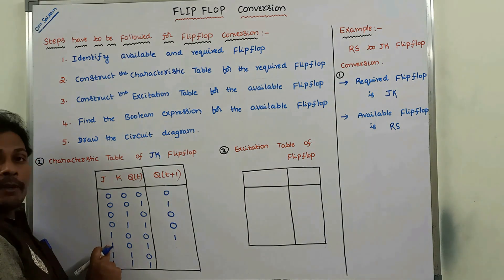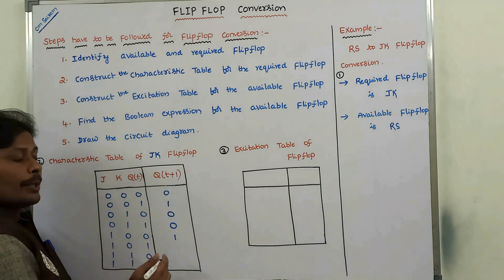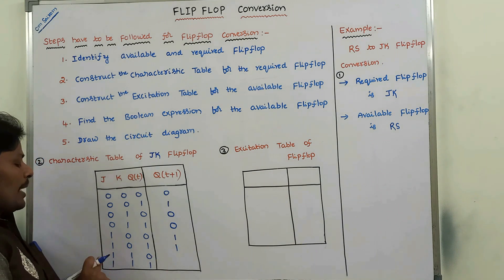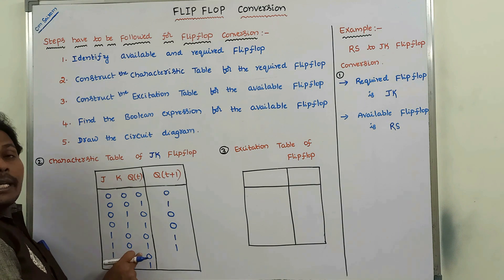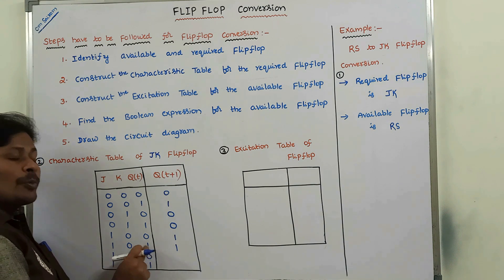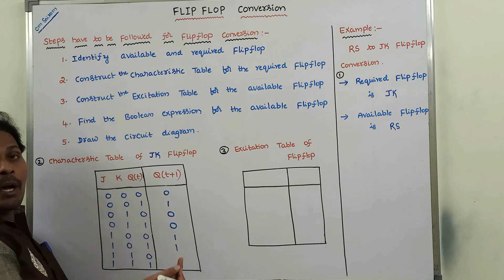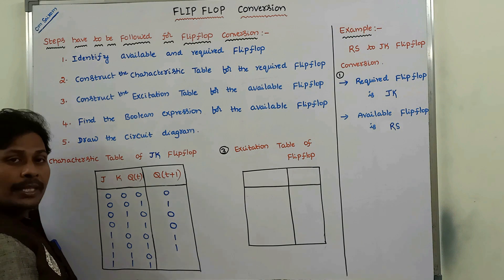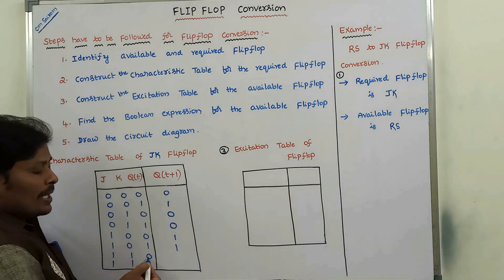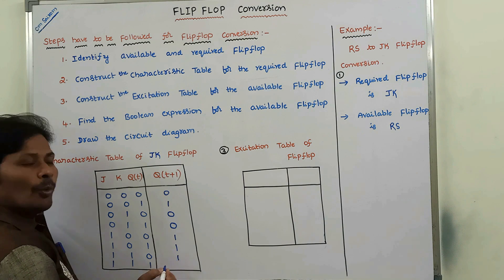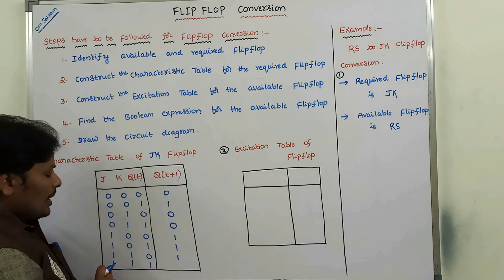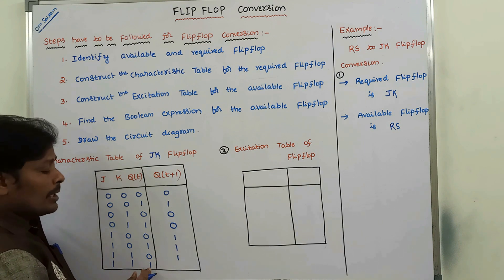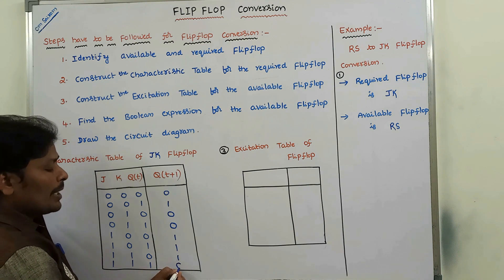When J=1 and K=0, the present output of the flip-flop is 1. When J=1 and K=1, whatever the previous output is there, it is complemented. So if the previous output is 0, it is complemented to 1. And if the previous output is 1, it is complemented to 0.